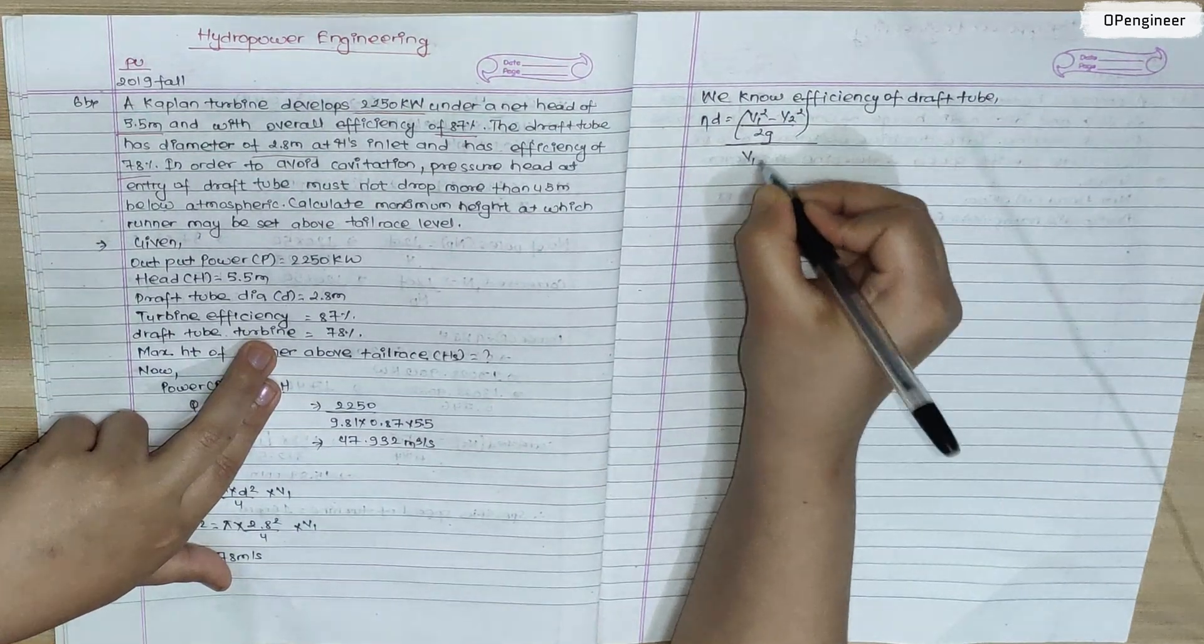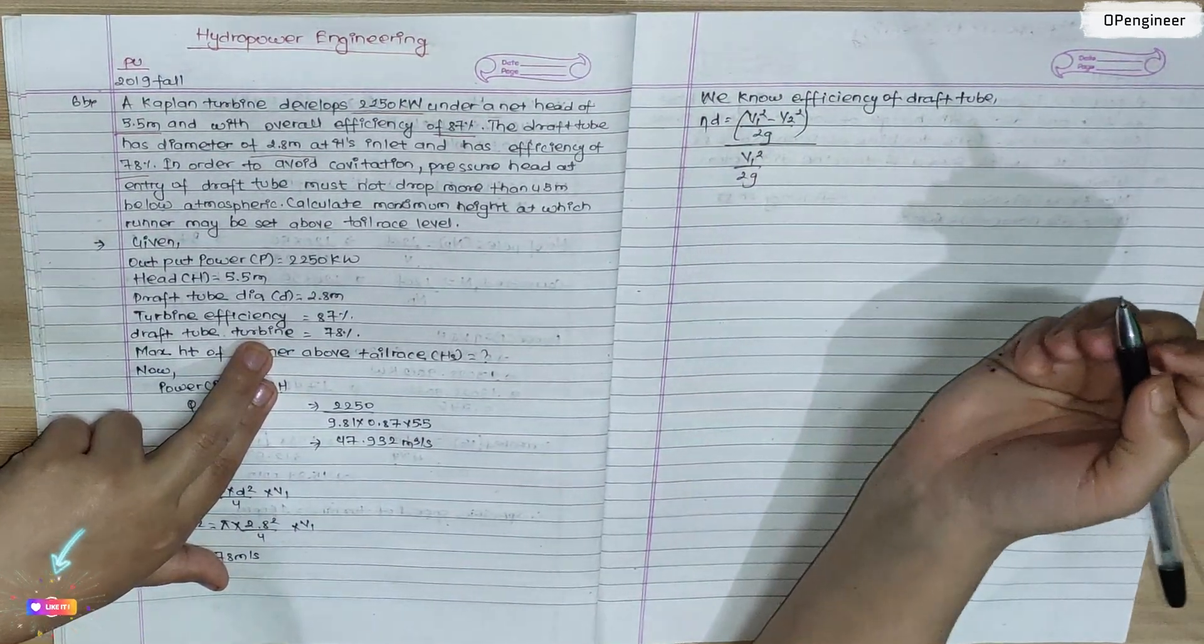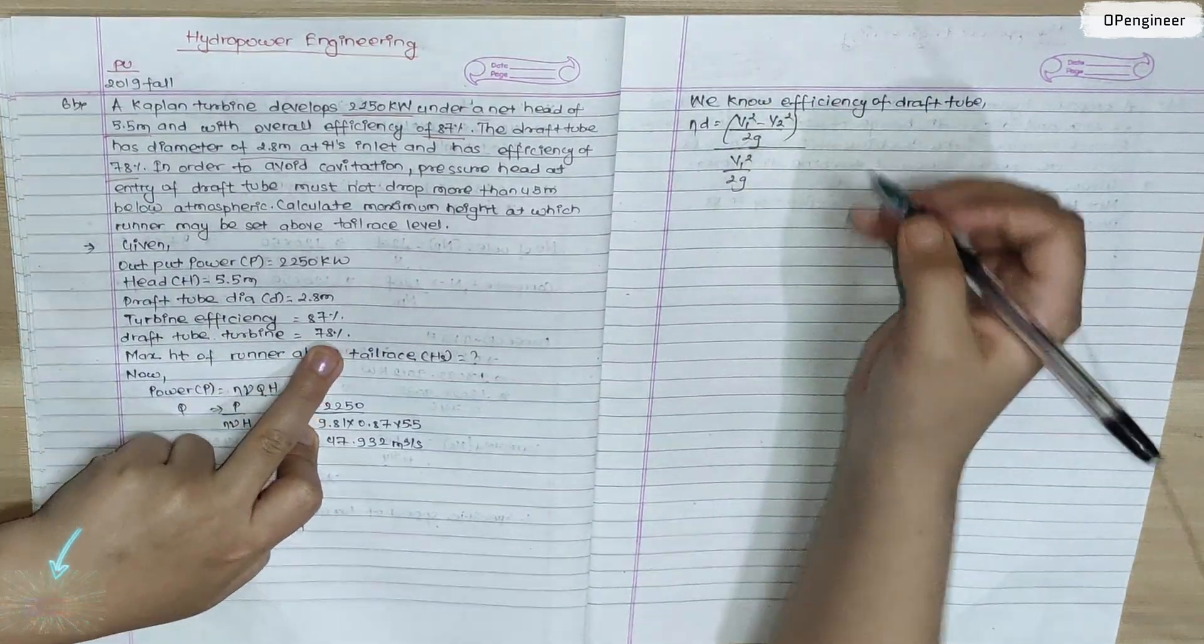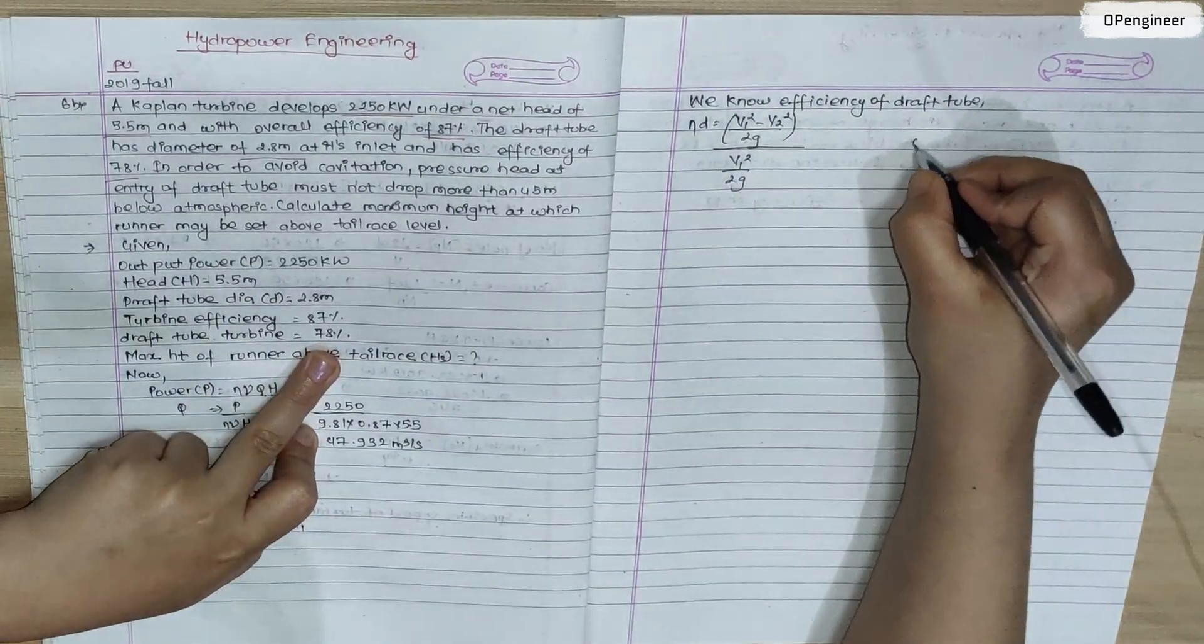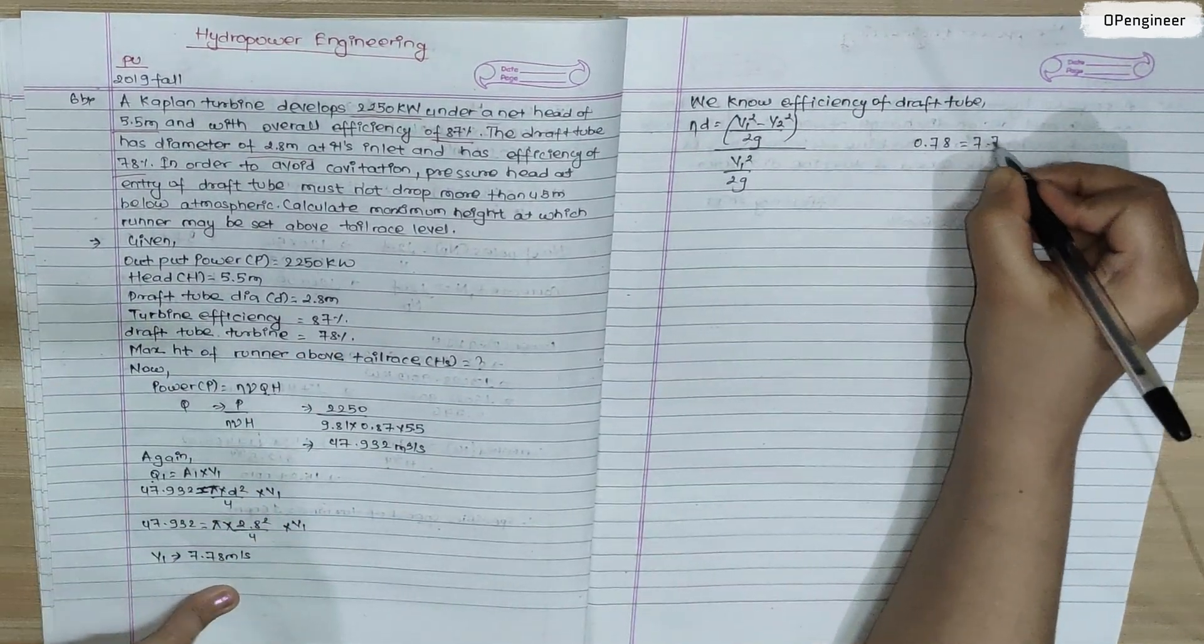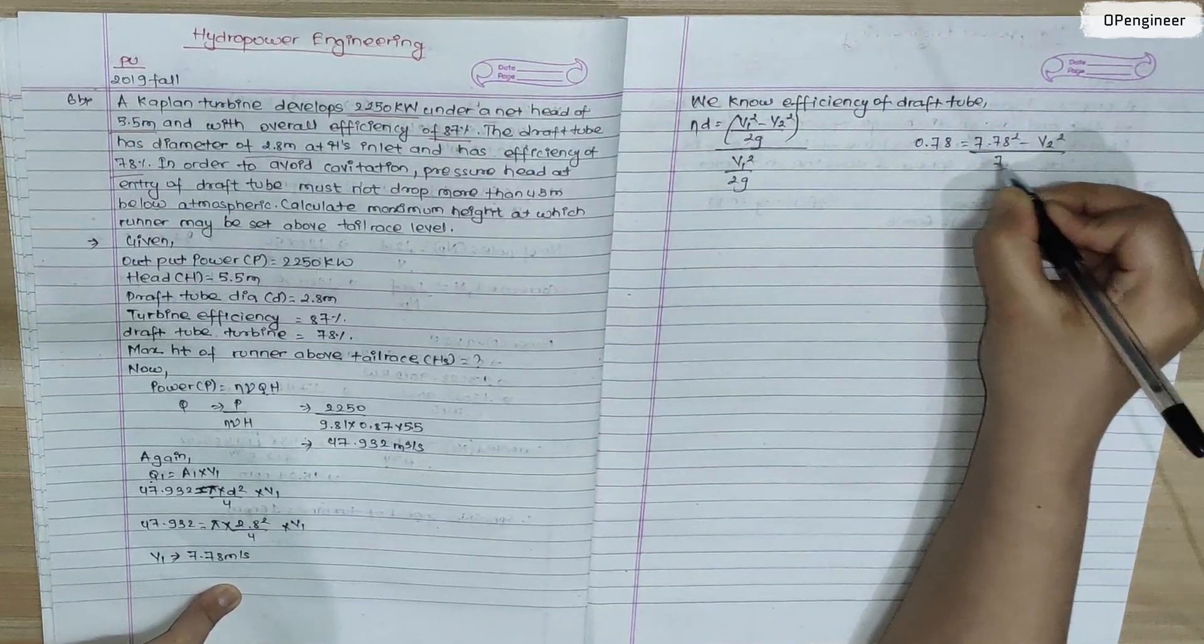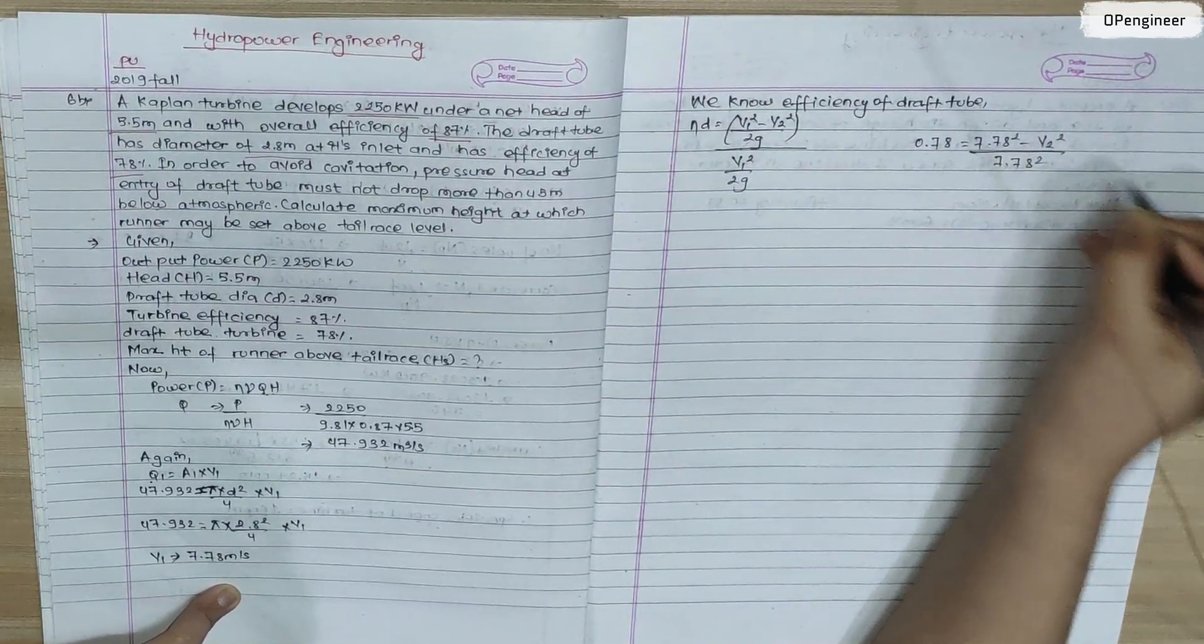So 0.78 equals to (7.78² - V2²) / 7.78². Solving for V2.